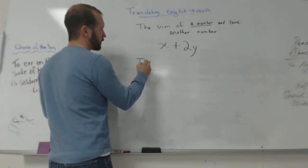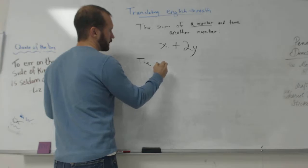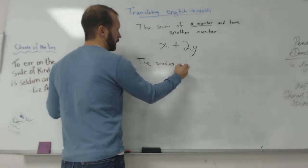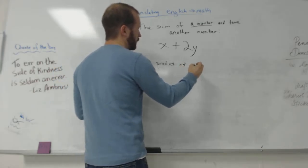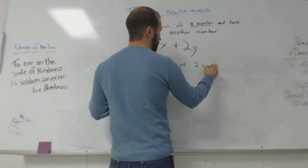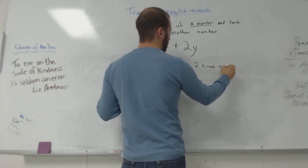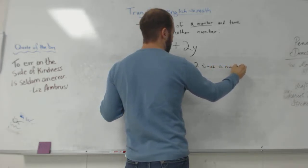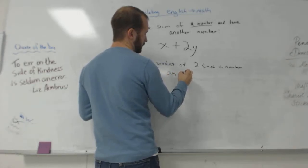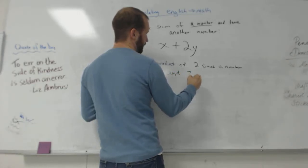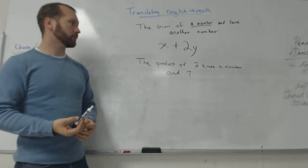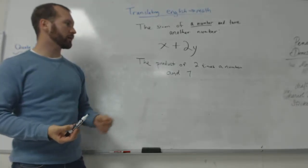It's going to be the same thing with the word product, right? The product of 2 times a number and 7. What would I write this?